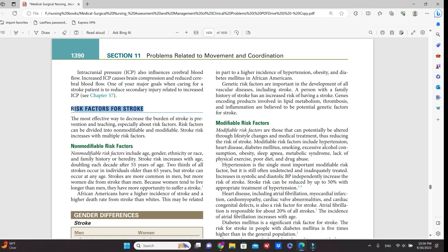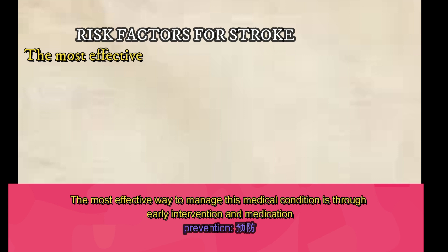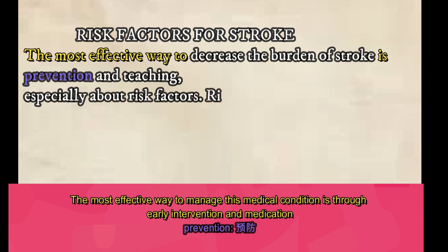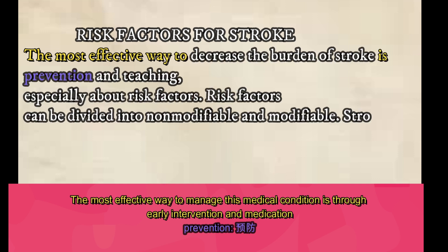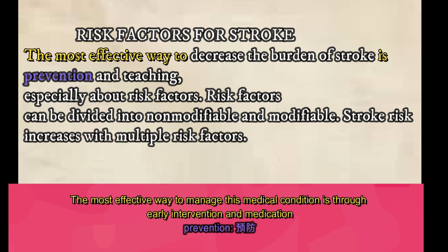今天我们来学习的内容是Risk Factors for Stroke。首先来看第一段话：The most effective way to decrease the burden of stroke is prevention and teaching, especially about risk factors。这里有个句型 'The most effective way to... is...'，意思是最有效的方法。Prevention就是预防的意思。整句话的翻译就是：减轻中风的负担最有效的方法就是预防和教育，特别是关于风险因素的教育。